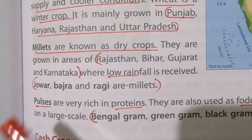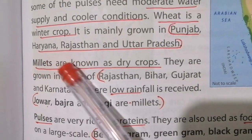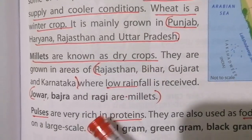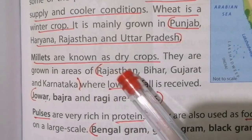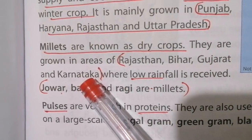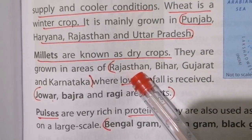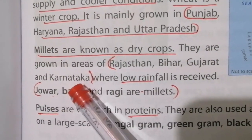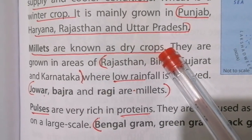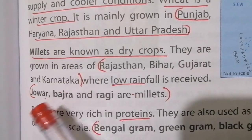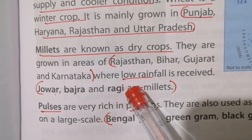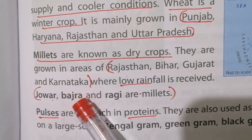The next crop is millets. Millets are known as dry crops because they are grown in areas of low rainfall, such as Rajasthan, Bihar, Gujarat, and Karnataka. Examples of millets are Jowar, Bajra, and Ragi.